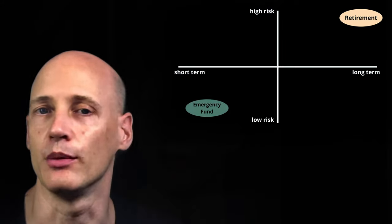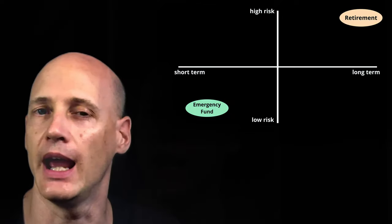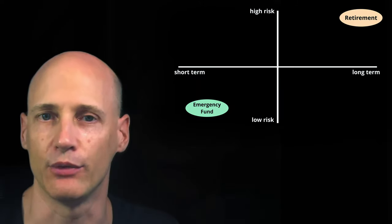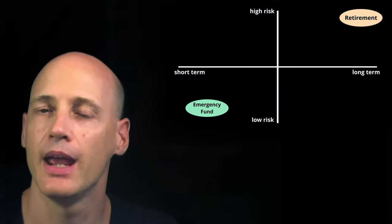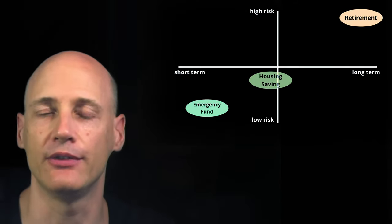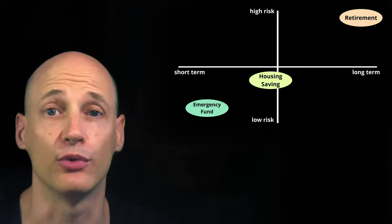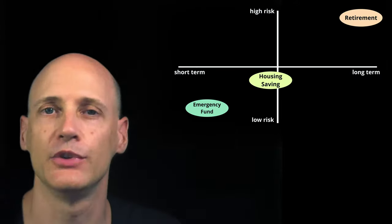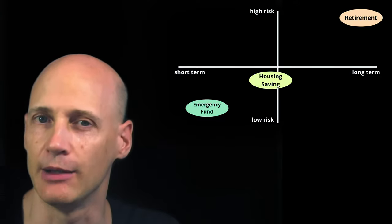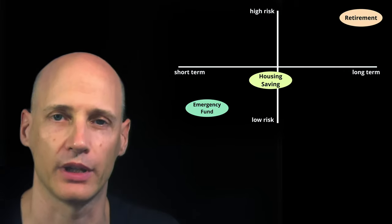On the other end of the spectrum is an emergency fund. You need this money on short notice and you can't accept high volatility — you can't have your money suddenly worth only half as much. Then there's stuff in between, like saving up for a house. You might buy one in one to four years, you don't know exactly, and you can accept a little volatility and probably commit to two or three years.